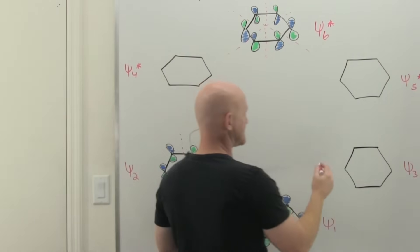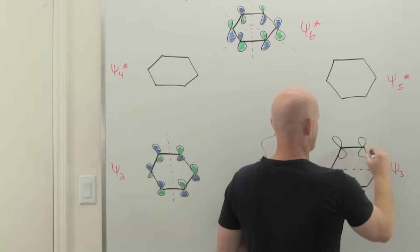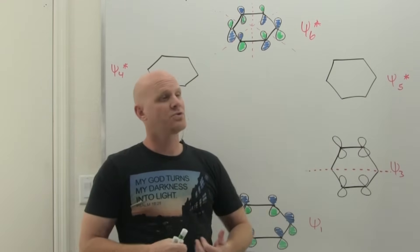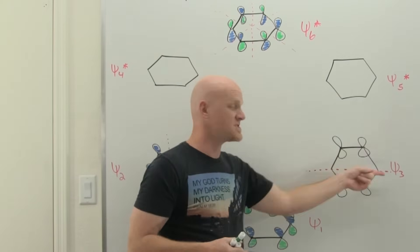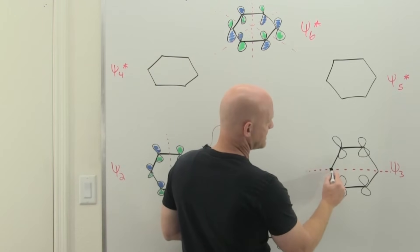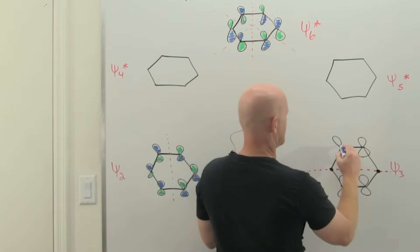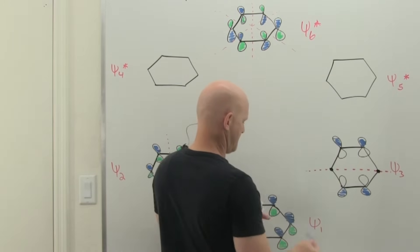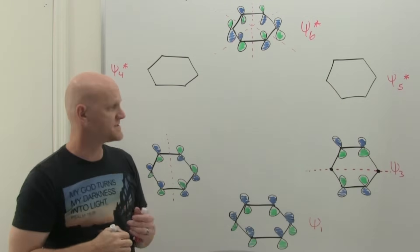Psi 3 also has one node, but this time the node runs right down the middle through the atoms instead of through the bonds. When a node crosses through an atom, that atom has zero orbital density, so we don't draw an orbital representation there — we place a small dot to indicate the node location. This is similar to what we saw with the allyl cation, anion, and radical in the last chapter. This representation is one giant molecular orbital, not six separate p-orbitals.